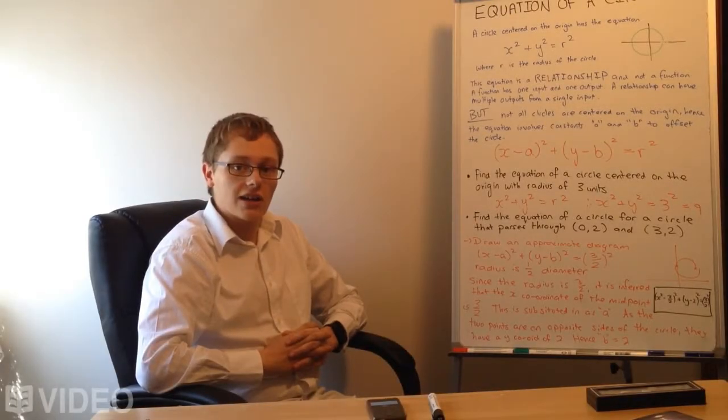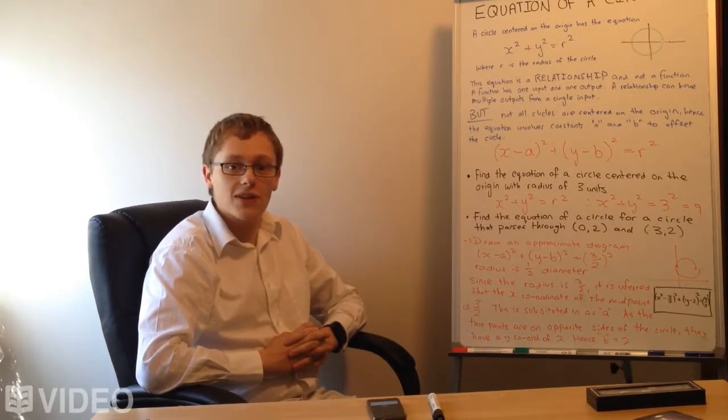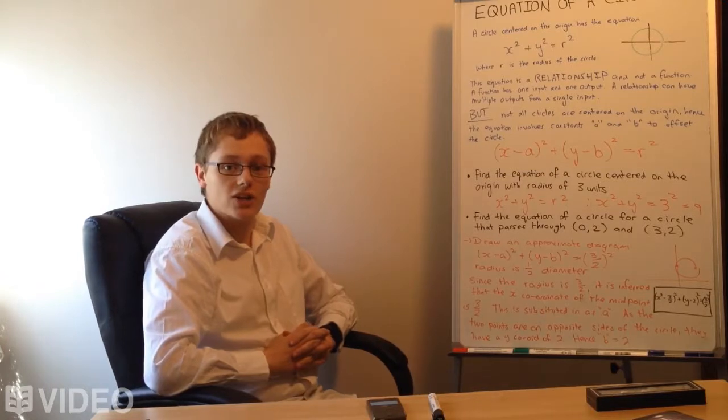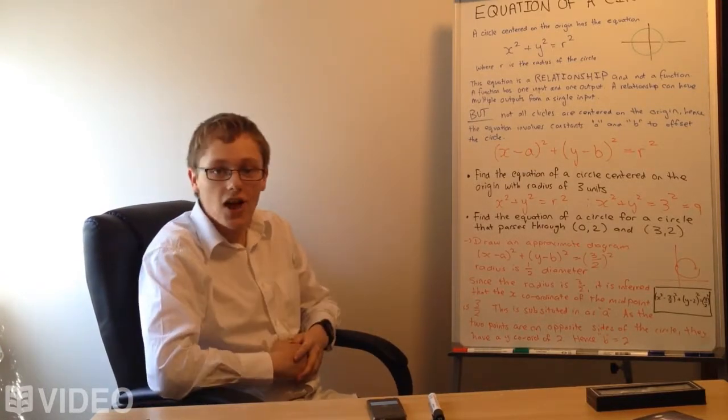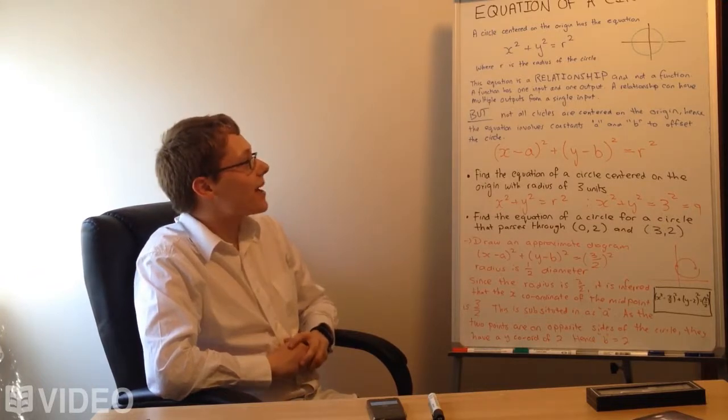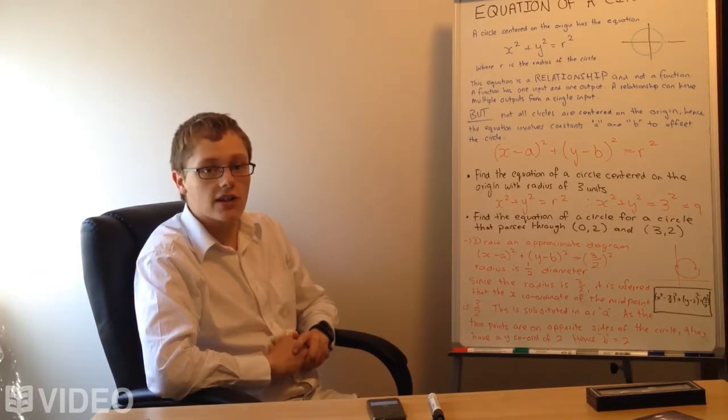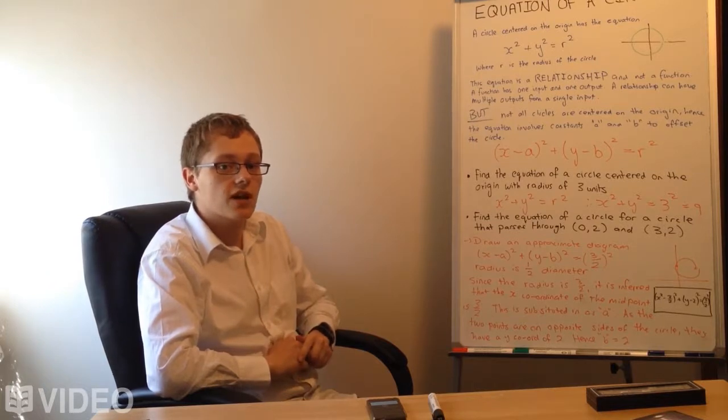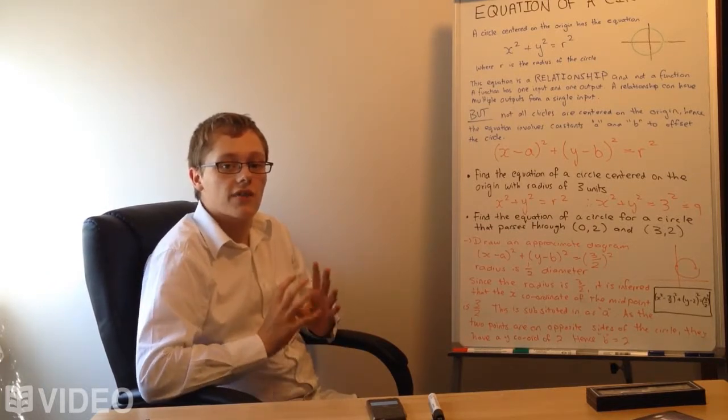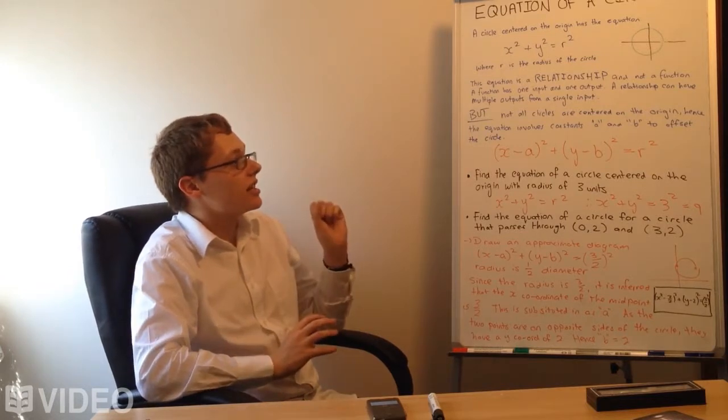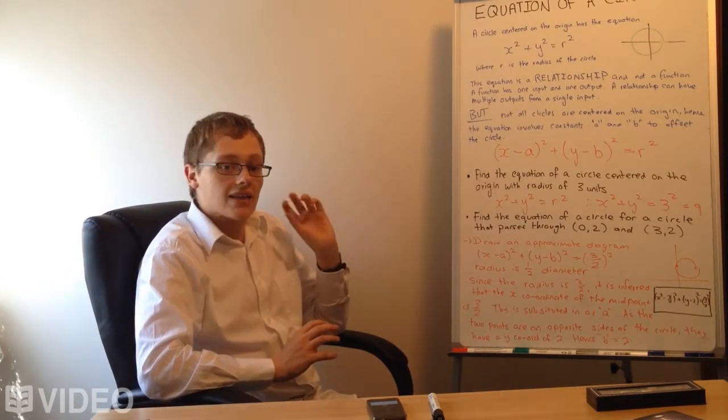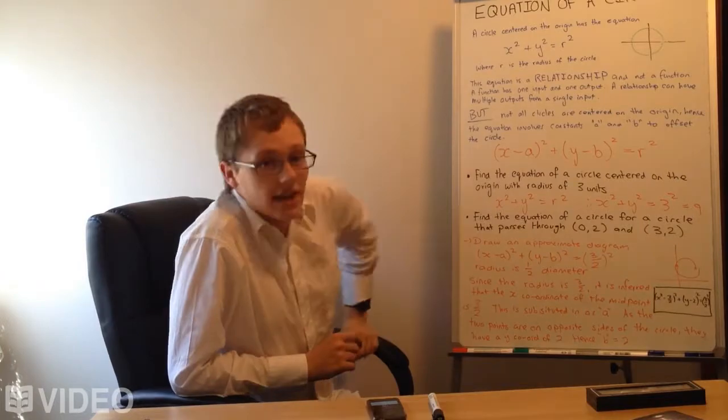So in the season finale of season 2 of Formulae videos, we're going to look at the equation of a circle. It's not quite a line, it's a slightly different shape, but it applies nicely to linear algebra because it gives you a different perspective on what a function is. And this isn't actually a function, it's a relationship. So let's have a look at what that actually means.